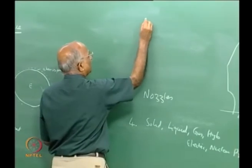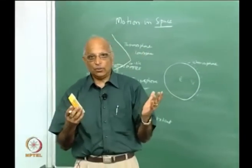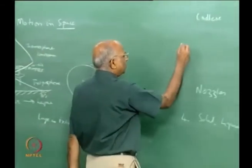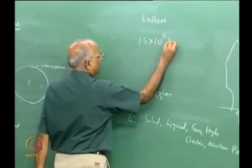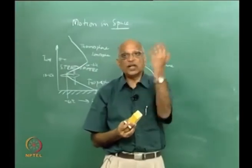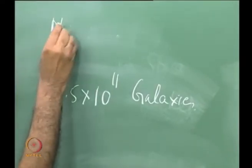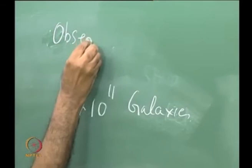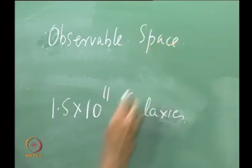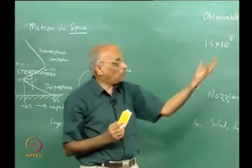In the observable part of space — what we can see through a telescope — there are approximately 1.5 × 10¹¹ galaxies. Space extends beyond what we can observe. Galaxies are gravitationally bound systems of stars, possibly containing dark matter, gas, and dust. Out of these 1.5 × 10¹¹ galaxies, the one to which we belong is called the Milky Way galaxy.